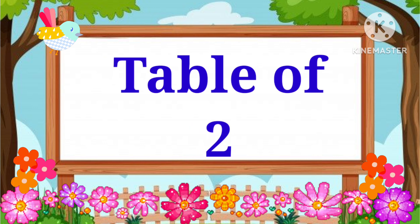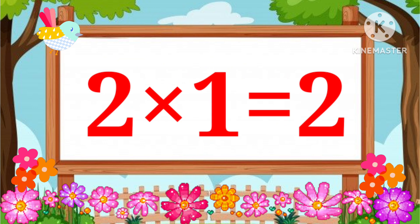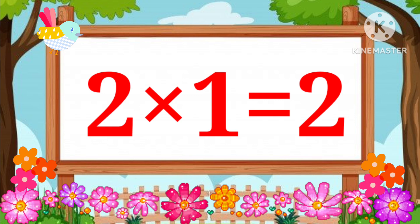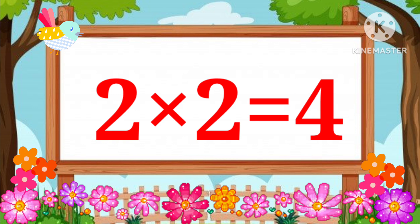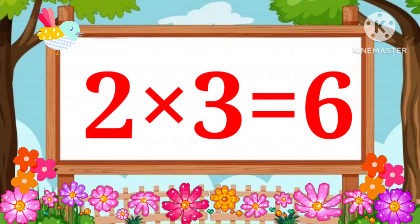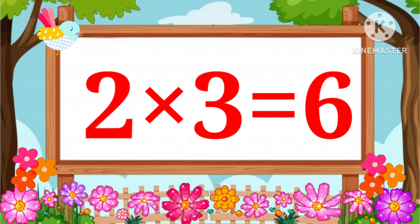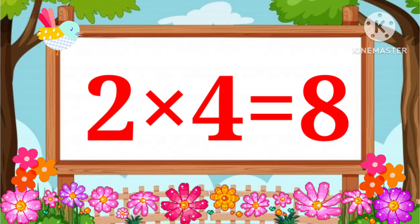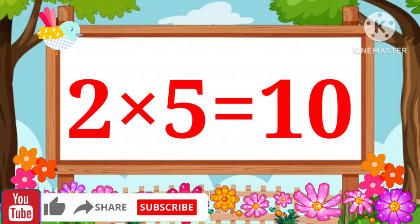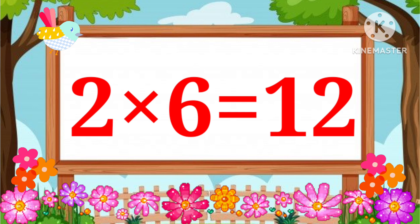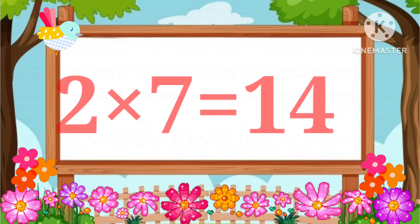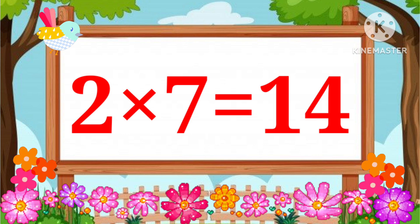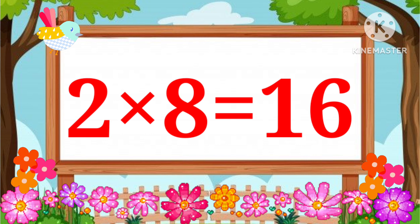Table of Two. 2 one's a 2, 2 two's a 4, 2 three's a 6, 2 four's a 8, 2 five's a 10, 2 six's a 12, 2 seven's a 14, 2 eight's a 16.